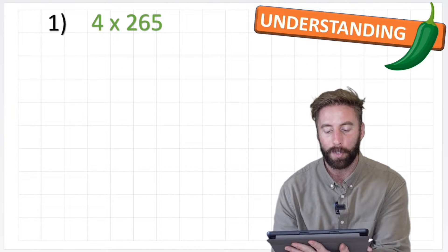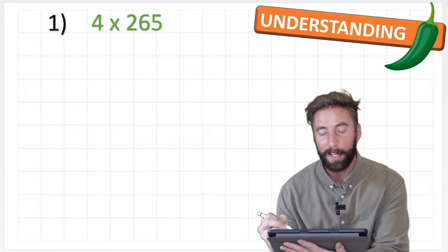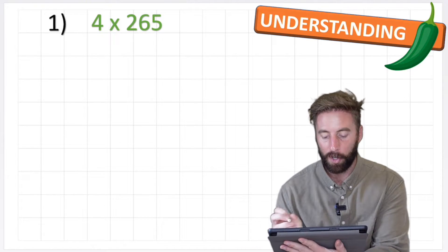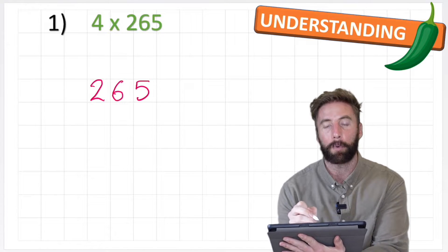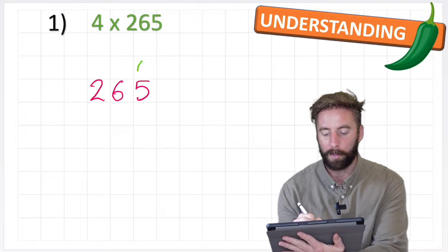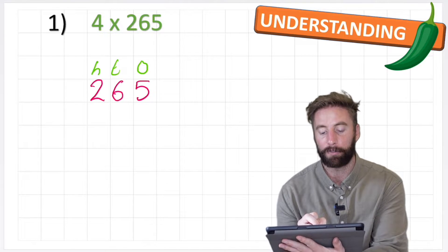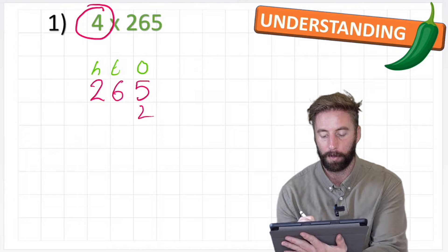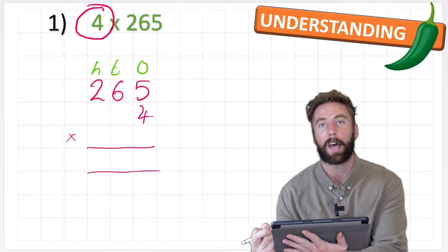Our green chilli challenge is 4 times 265. Step one says to complete our grid, making sure we don't forget our ones, tens and hundreds. We arrange our numbers in the columns with 265 at the top, labelling ones, tens and hundreds so we don't forget where each digit goes. This 4 is really important — we put it in the ones column. Then I put in my equals lines and multiplication sign and I'm ready to start.